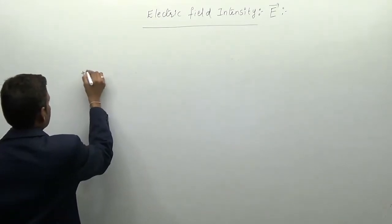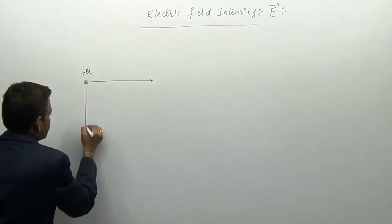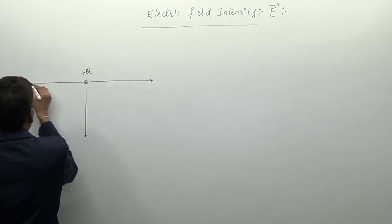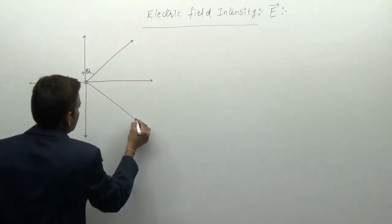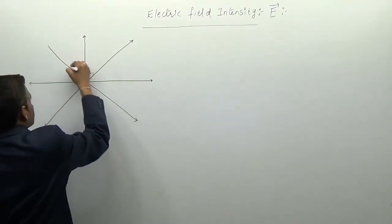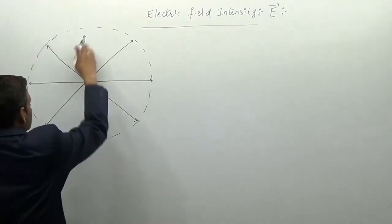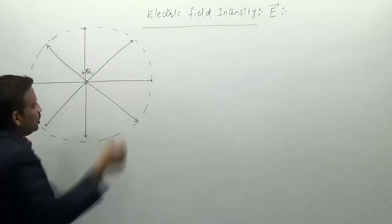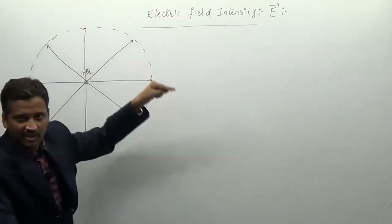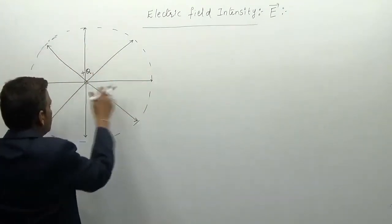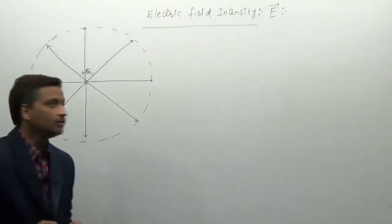Here we take a positive charge — let us say this is plus Q or Q1. We know that this is going to give us flux, or we can say these are the force lines which are emanating or coming out in all directions. These are the force lines or flux lines coming out radially in all directions. It is like a sphere which is radiating the field in all directions — not only in two dimensions but everywhere.